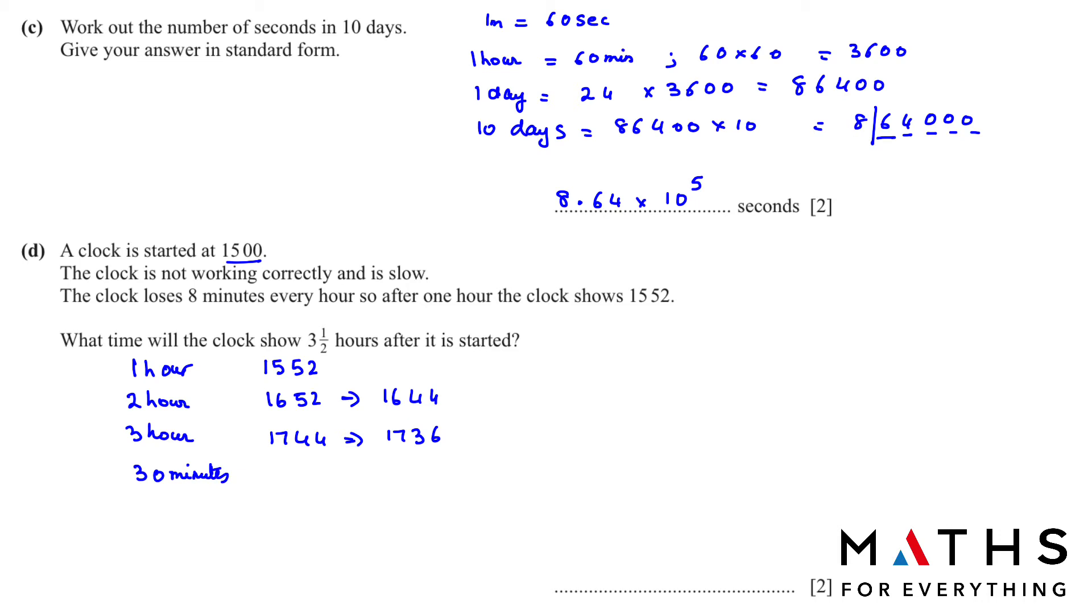Now after 30 minutes, half an hour, we add 30 to this. Whenever it becomes more than 60 you add 1 to the hour. So it's supposed to be 1806. For every 1 hour it was losing 8 minutes. For 30 minutes it will lose half of it, so it will lose 4 minutes. Subtract 4 from this and we will get 1802. That's the time on our clock.